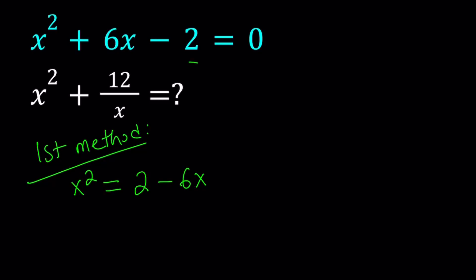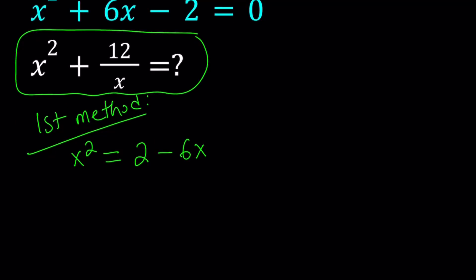And now let's take a look at our rational expression. I can make a common denominator and write it as x cubed plus 12 over x. And now I have an x cubed here, but I do know x squared in terms of x. So let's write this x cubed as x times x squared. And then replace x squared with what it is.